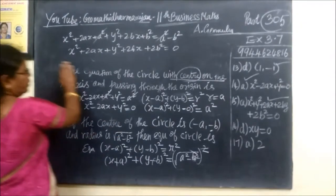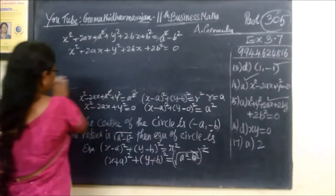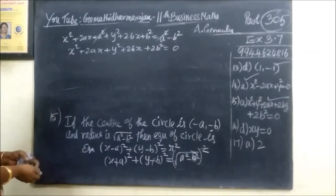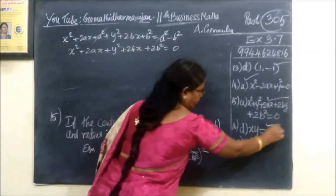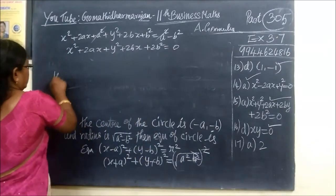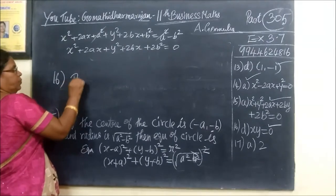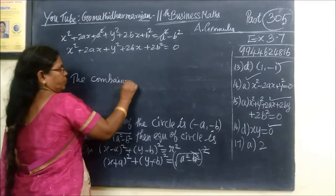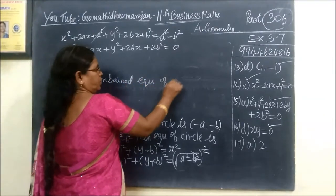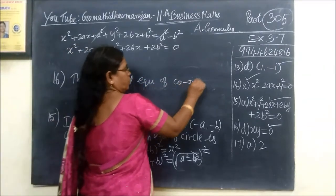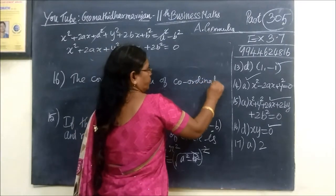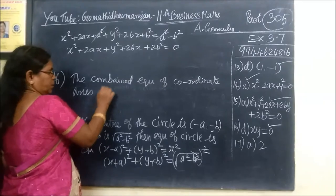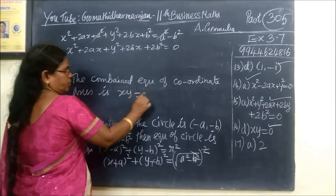Question number 16: the combined equation of the coordinate axes. The combined equation of the coordinate axes is xy = 0.